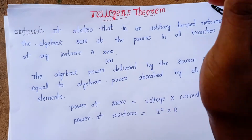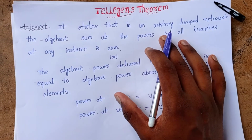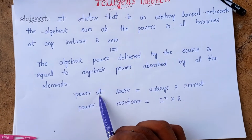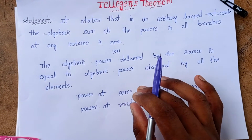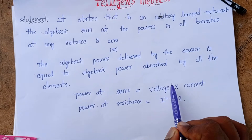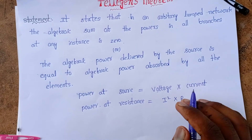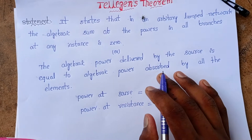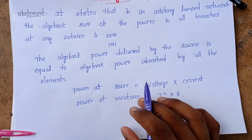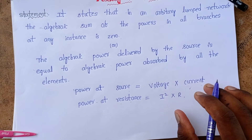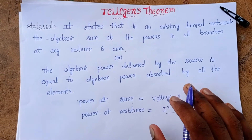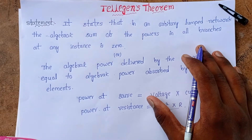Power is always delivered by the source and absorbed by the elements, which are resistors in a network. To find the power at any element or source, we use the formulas: power at a source equals voltage times current (P = V × I), and power at a resistance equals I² × R.